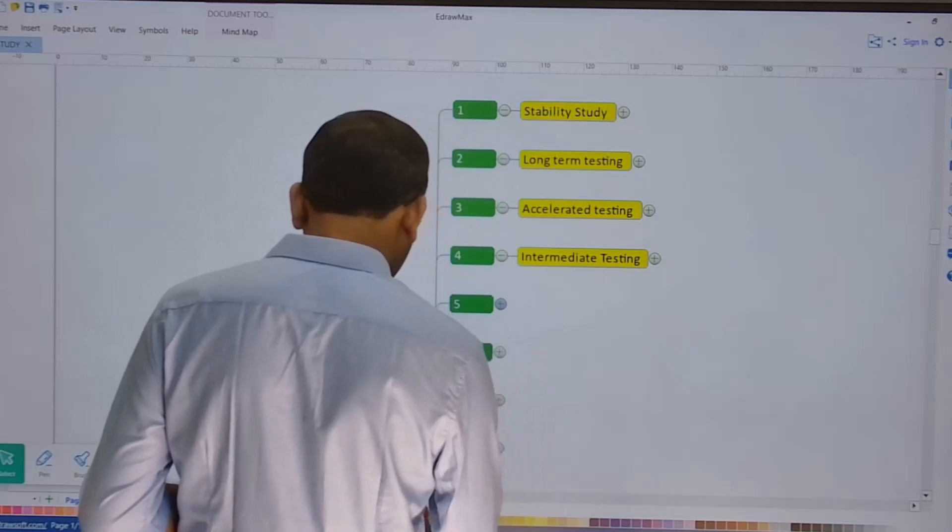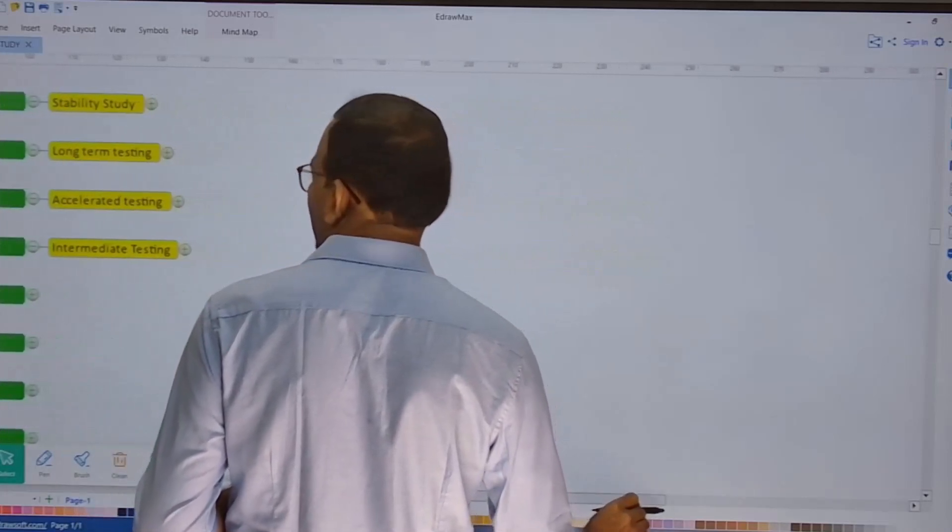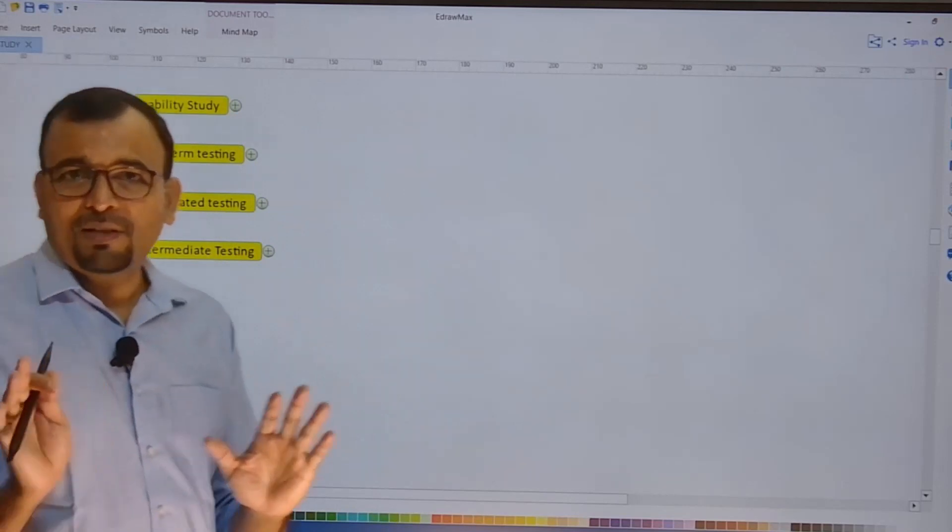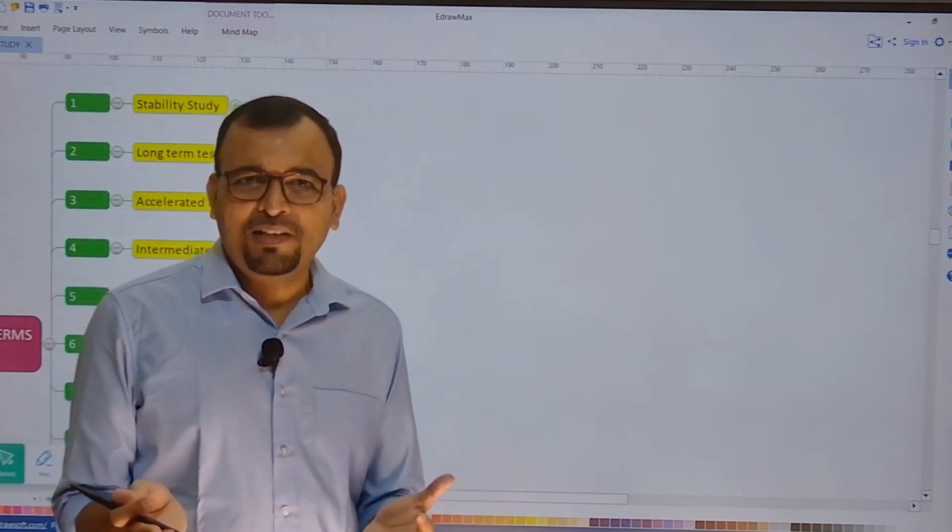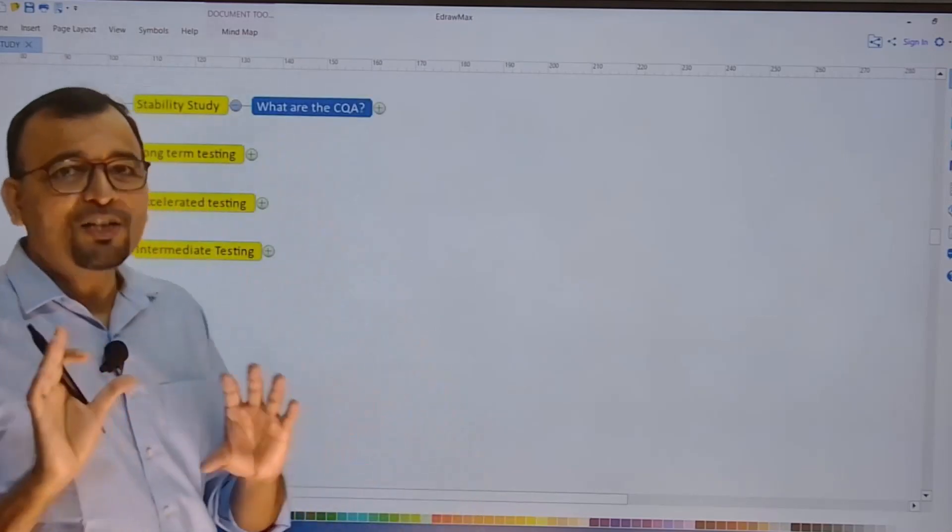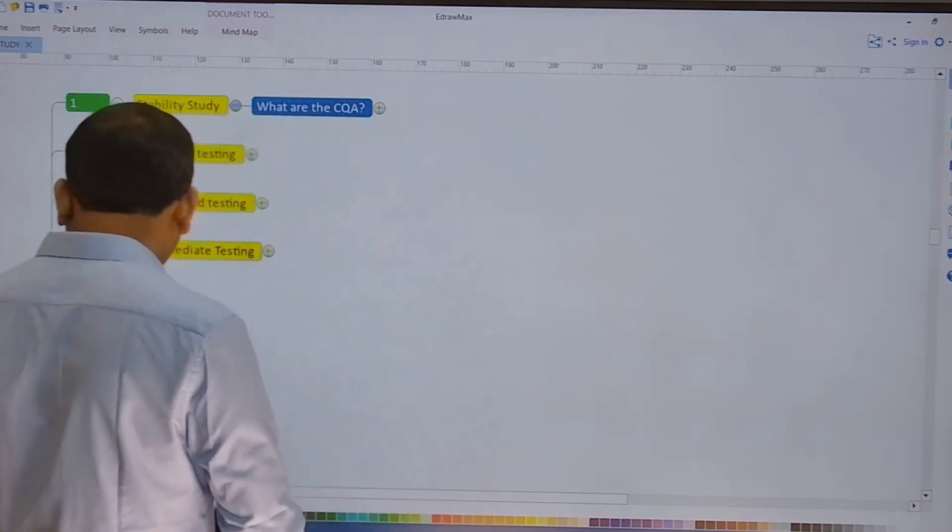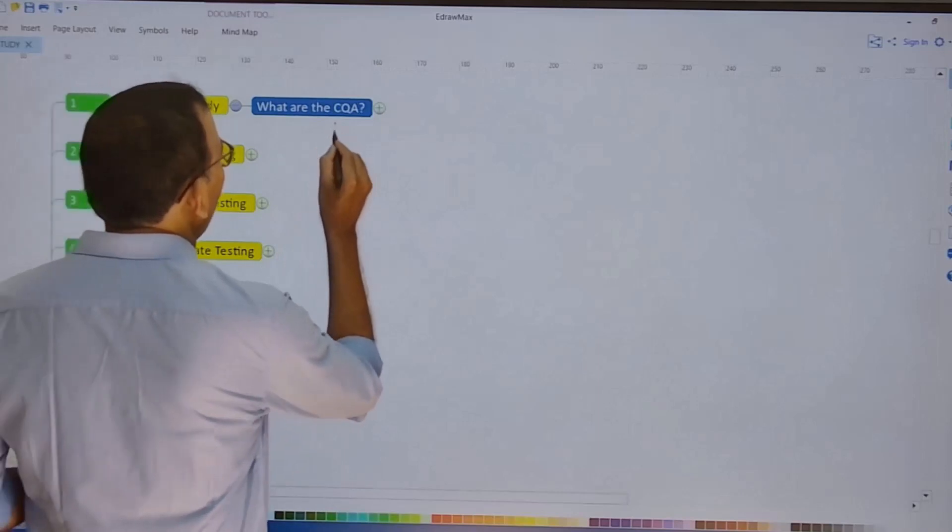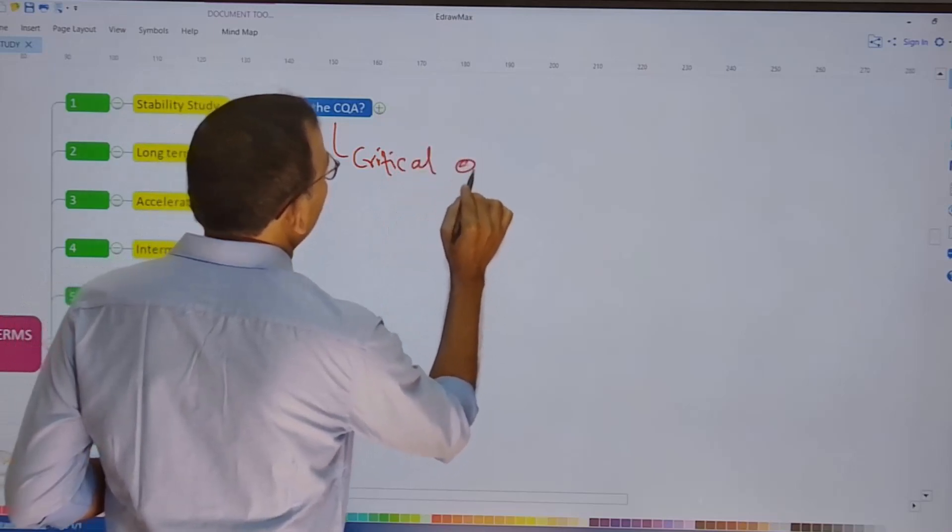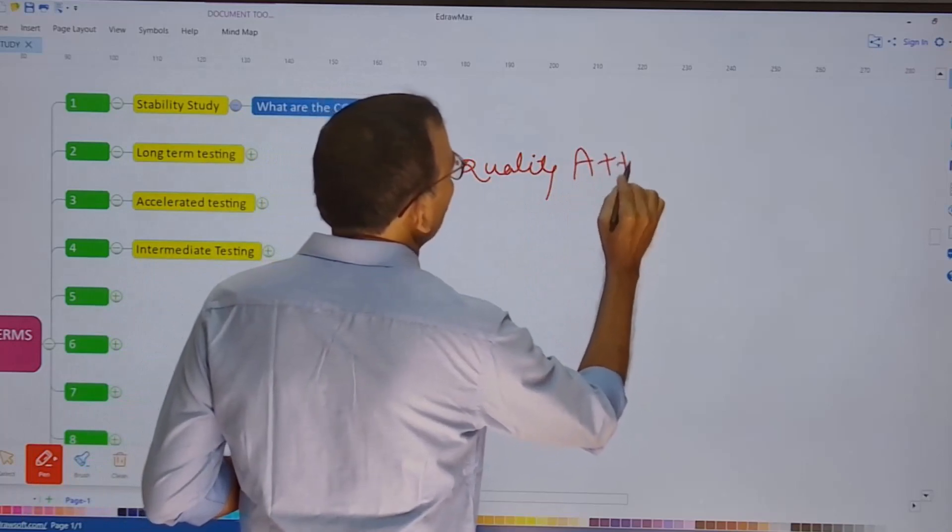Let us begin with the discussion of the very first common term, that is the definition of stability study itself. So what is meant by stability study? Now before I move on to the definition given by the ICH, WHO, or many other regulators, let us first understand what are the important points which are related to the stability study and they can be critical quality attributes or CQA. CQA stands for critical quality attributes.